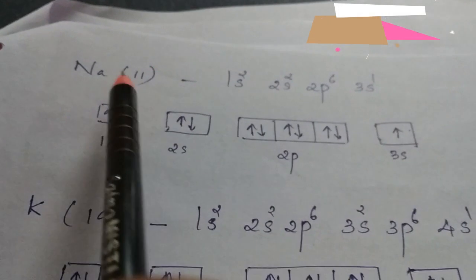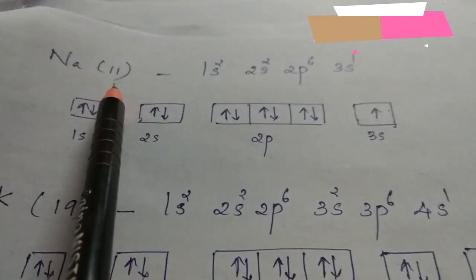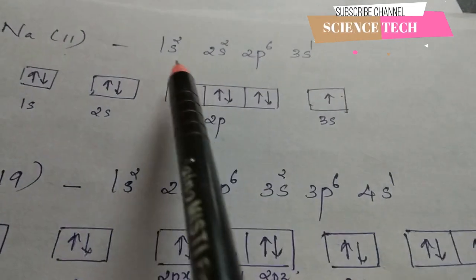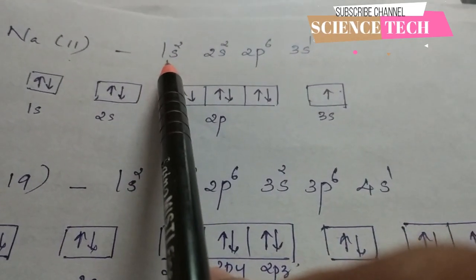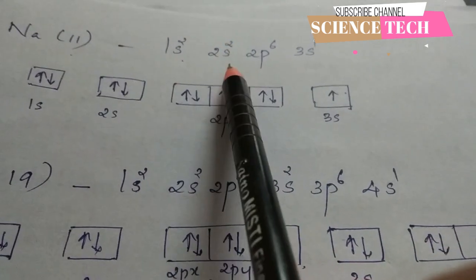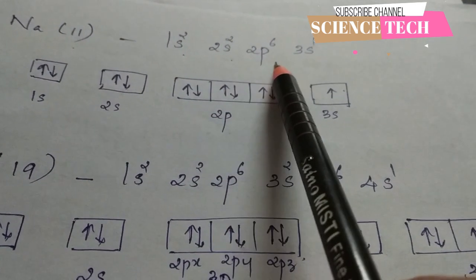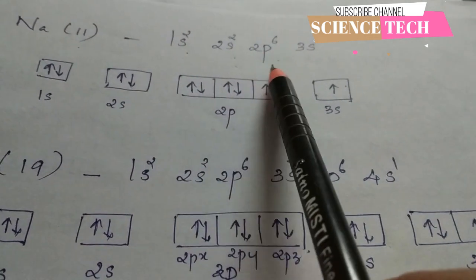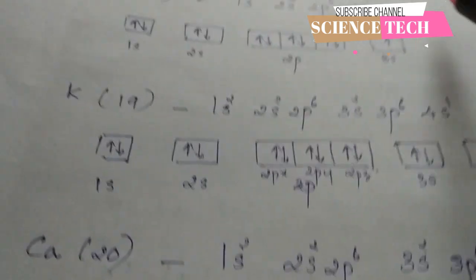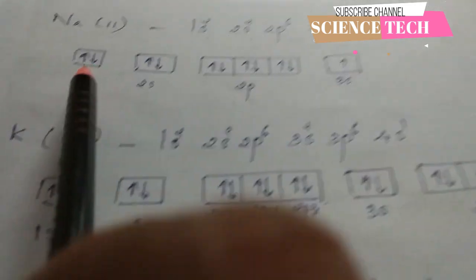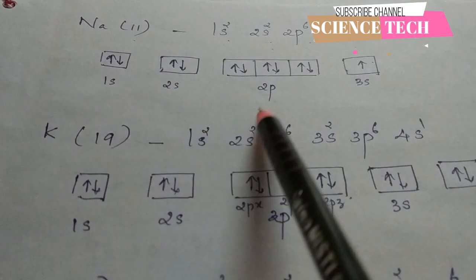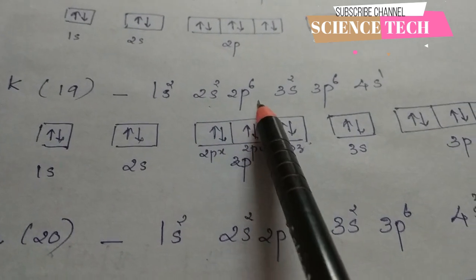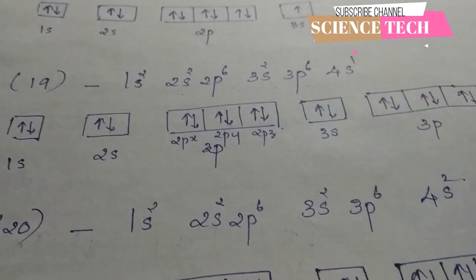Sodium has atomic number 11 with 11 protons and 11 electrons. Its electronic configuration is 1s2, 2s2, 2p6, 3s1. Potassium's configuration is 1s2, 2s2, 2p6, 3s2, 3p6, 4s1.